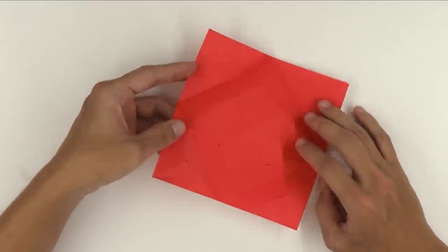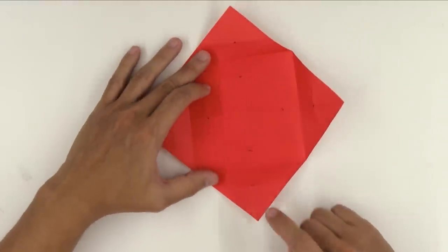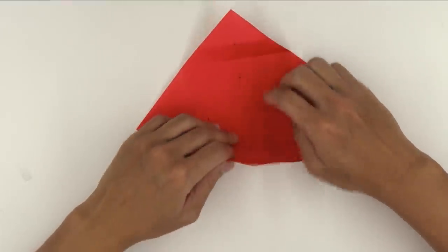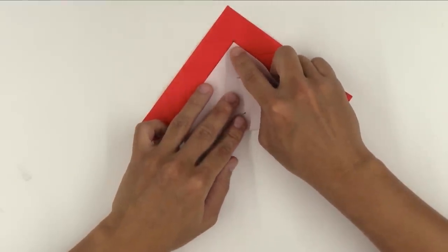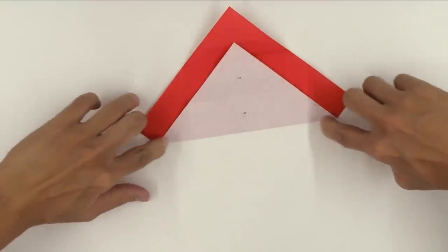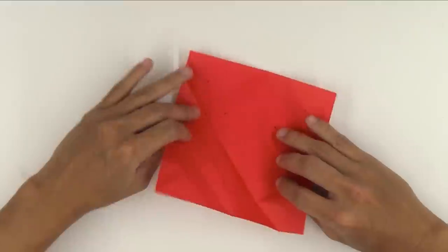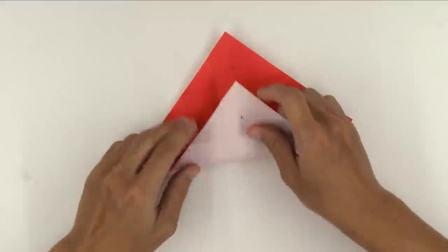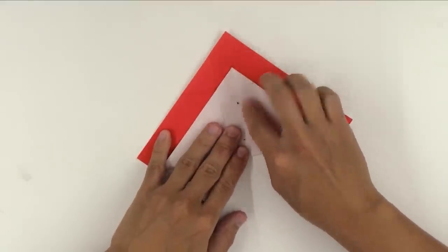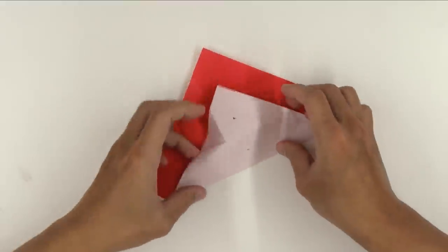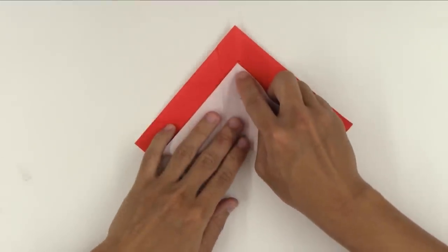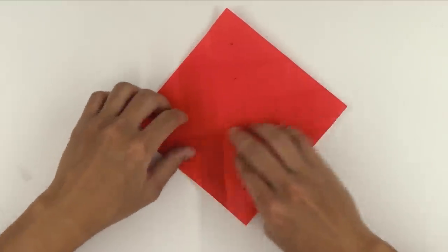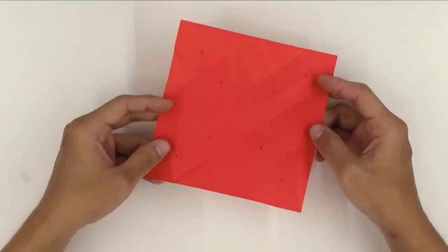Unfold everything. And fold, making the corner of the paper go up to this mark here. Unfold, and do the same thing on the other three sides. And the model will look like this.